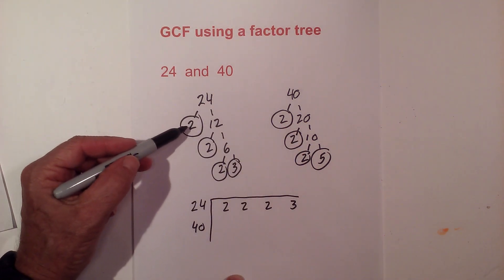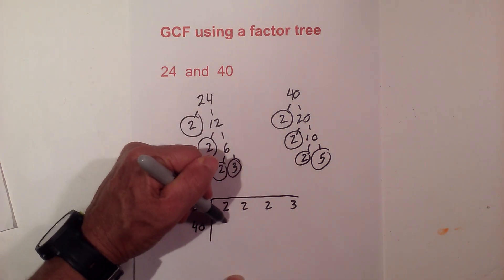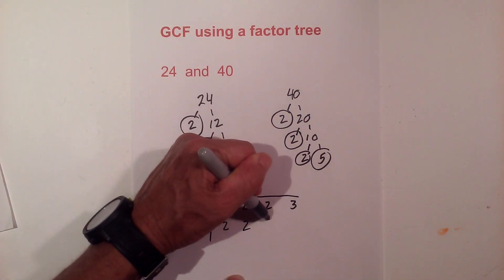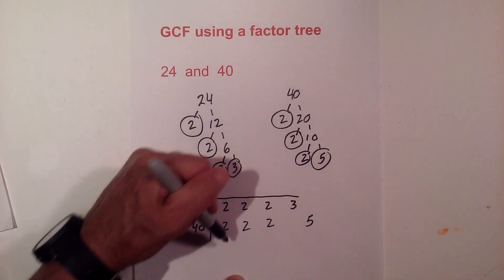Here are the prime numbers of 24: 2, 2, 2, and 3. And then the prime numbers of 40 are 2, 2, 2. I do not have a 3, so I'm going to skip over and write the 5 there.